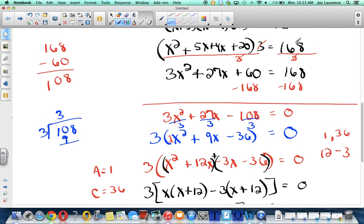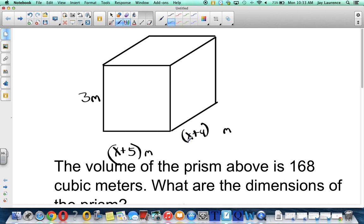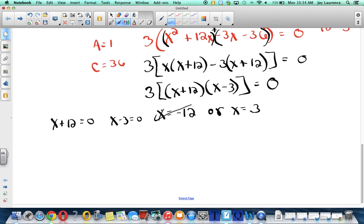Now, if x is negative 12, there's a problem. Because my prism ends up with negative sides. Like, this would become negative 7. And this would become negative 8. You can't have a measurement that's negative 8 units long. Or negative 7. All distances have to be positive. So I'm going to throw that answer away.